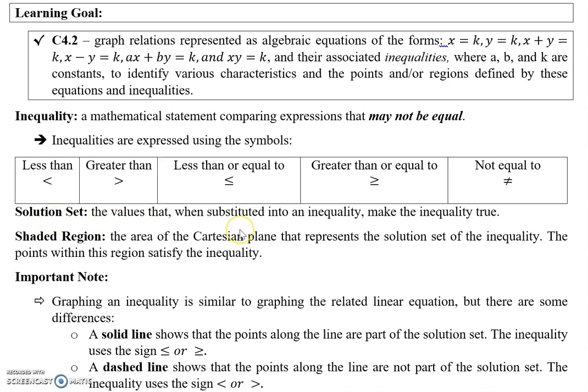The solution set contains the values that, when substituted into an inequality, make the inequality true — looking at the left side and right side. When plotting on a Cartesian plane, the shaded region represents the solution set of the inequality. The points within this region satisfy the inequality, and you shade the region accordingly.